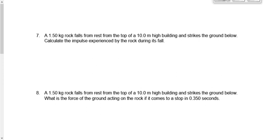Question number seven says, a 1.5 kilogram rock falls from rest from the top of a 10 meter high building and strikes the ground below. Calculate the impulse experienced by the rock during its fall. Question eight says, same rock falls from the same building, strikes the ground below again. What's the force of the ground acting on the rock if it comes to a stop in 0.350 seconds?